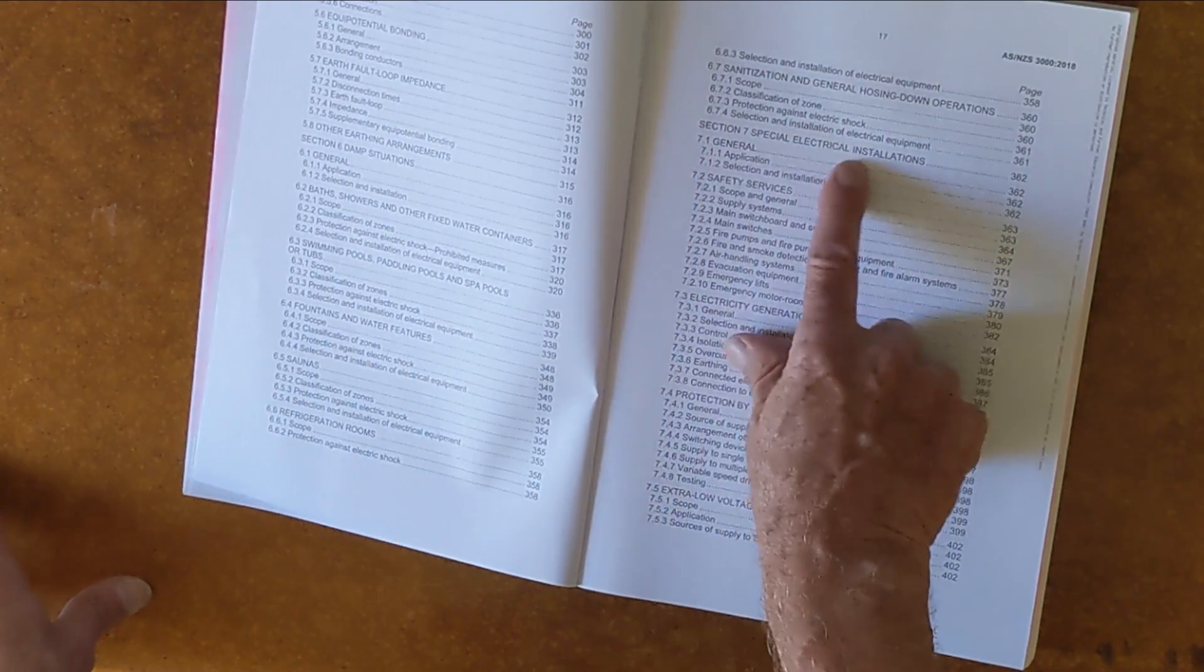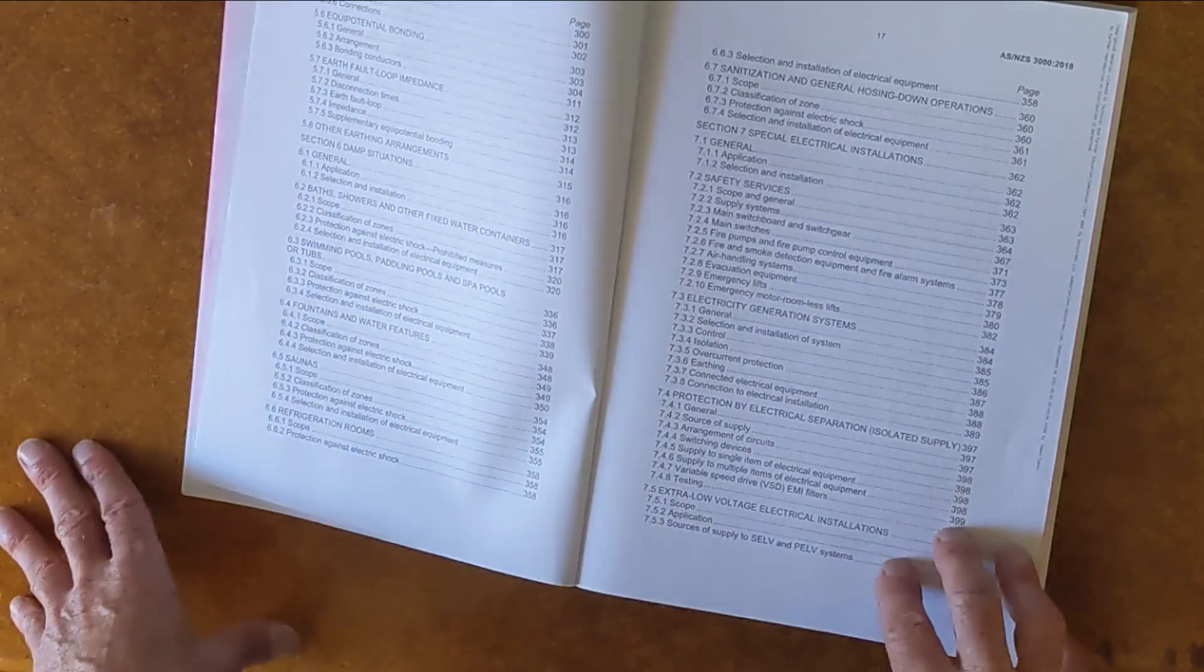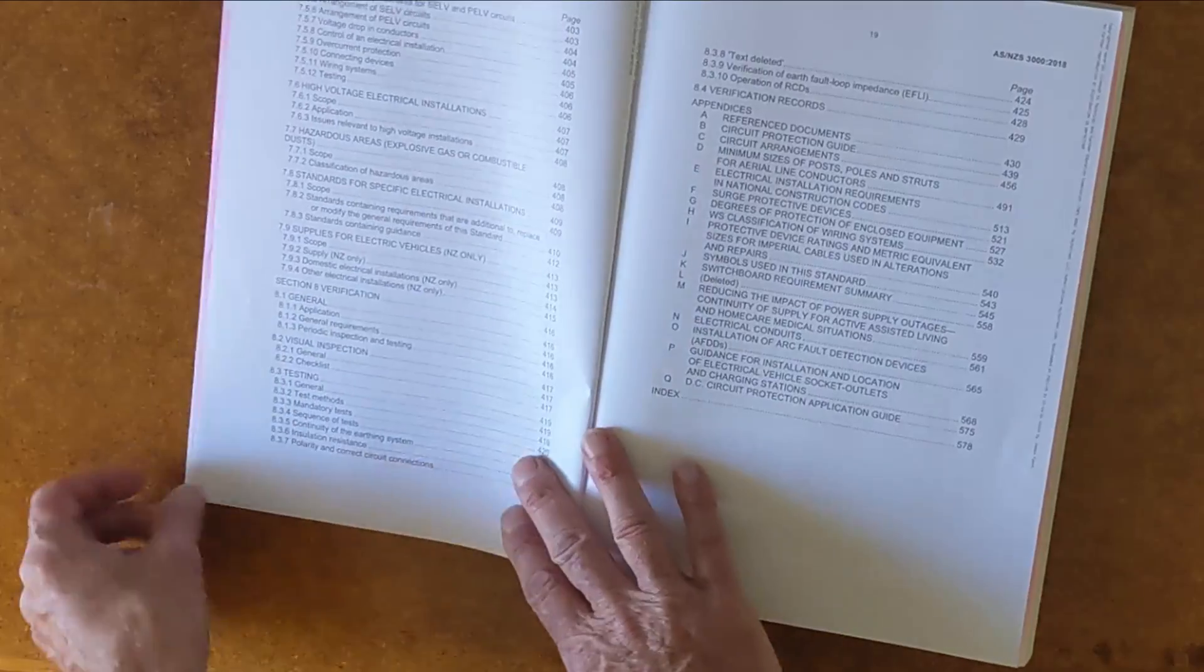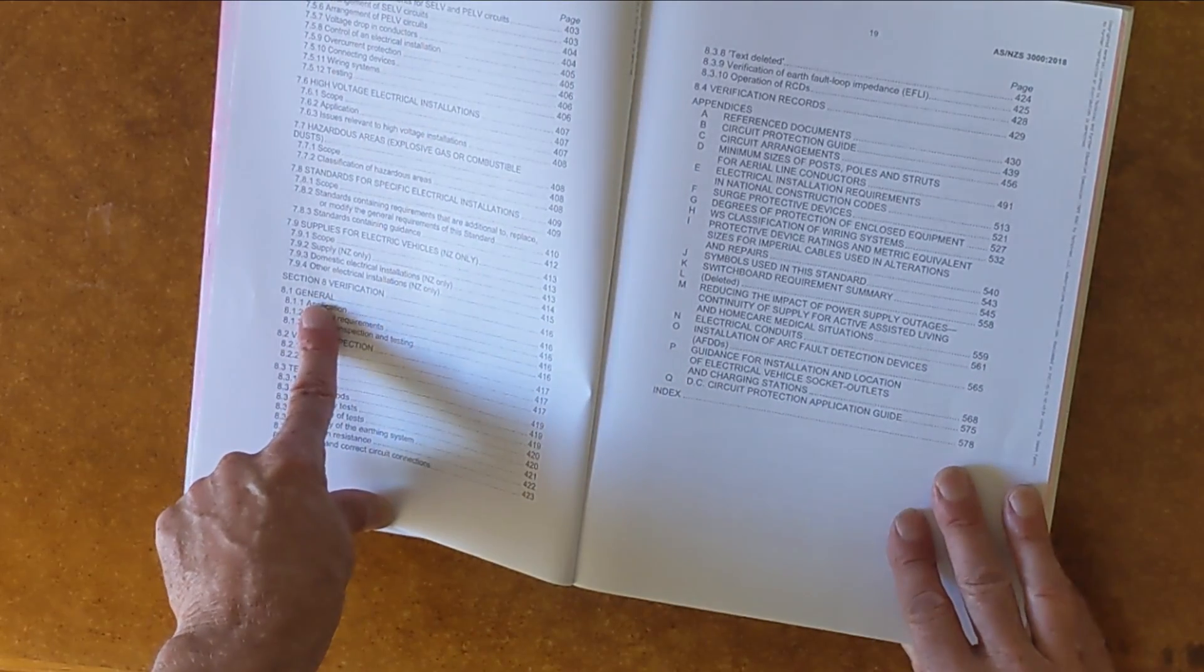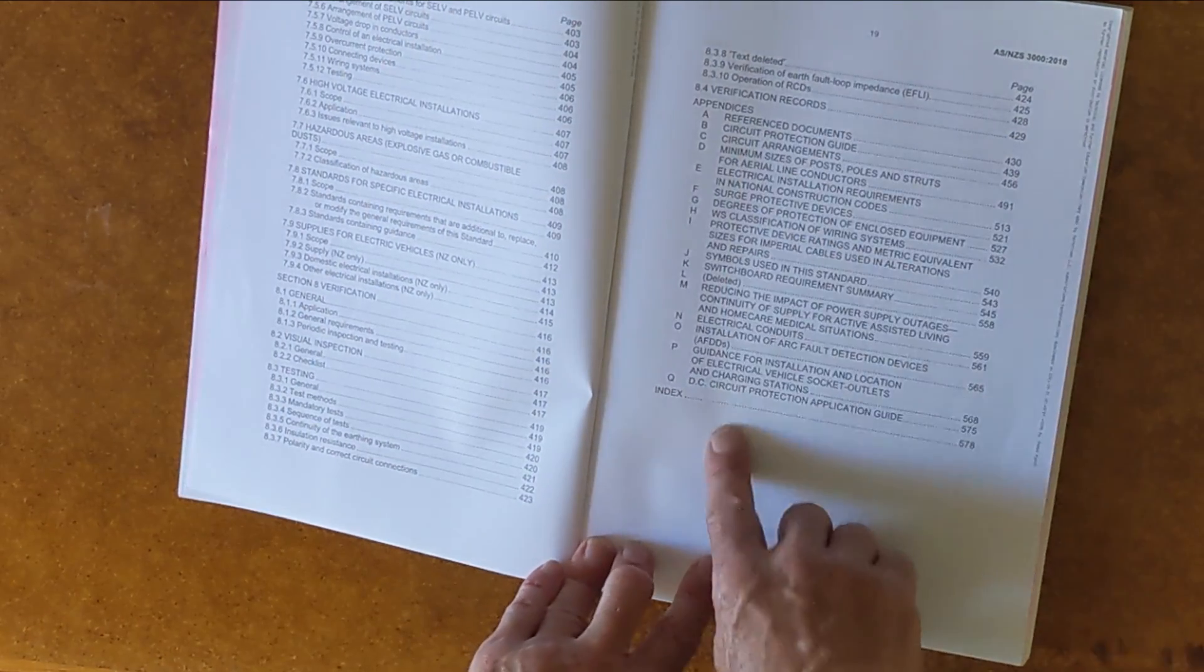Section seven is special installations. In other words, all the stuff that didn't fit somewhere else in the book. Then the new section, section eight is testing and verification. Then we move on to appendices.